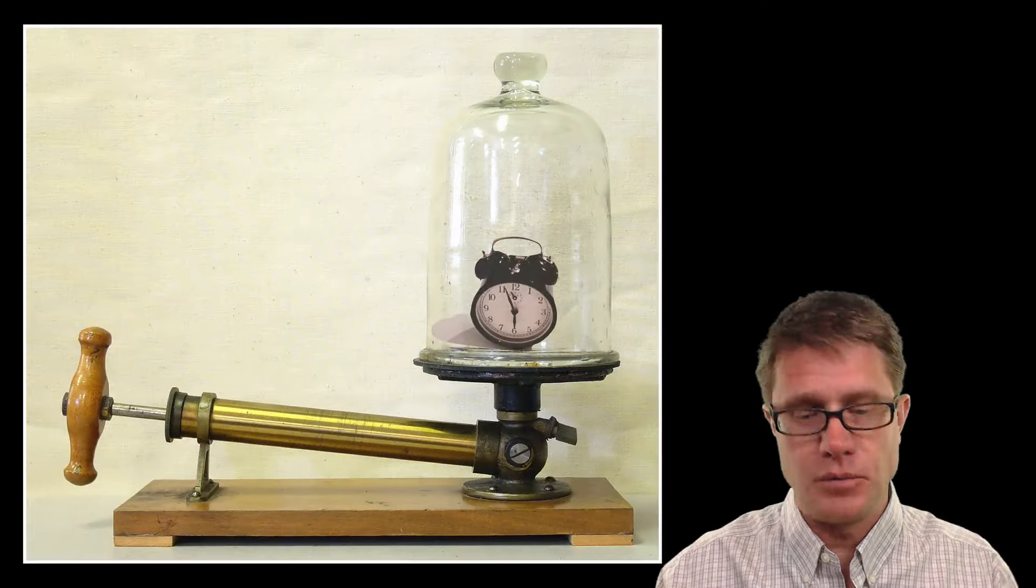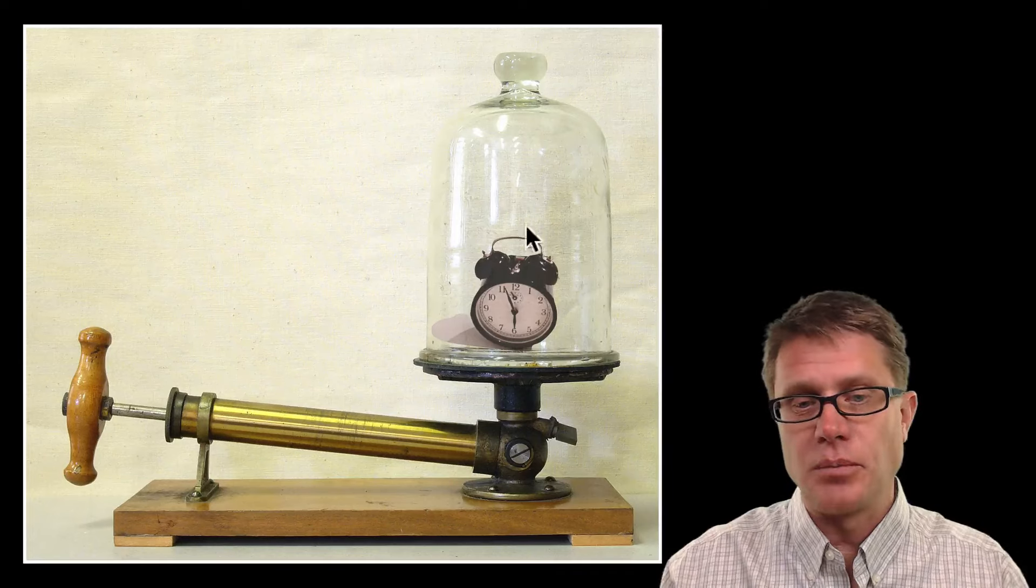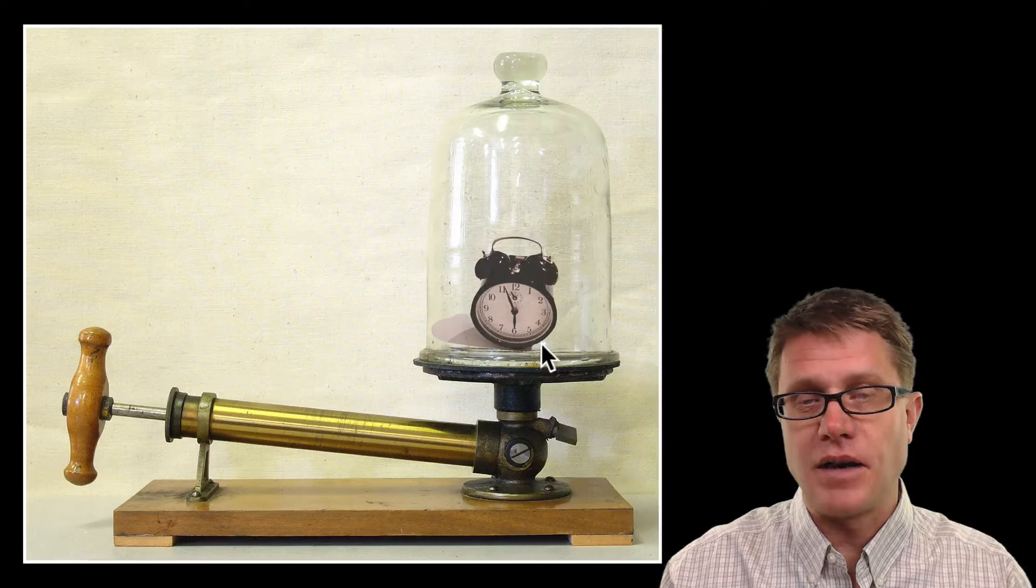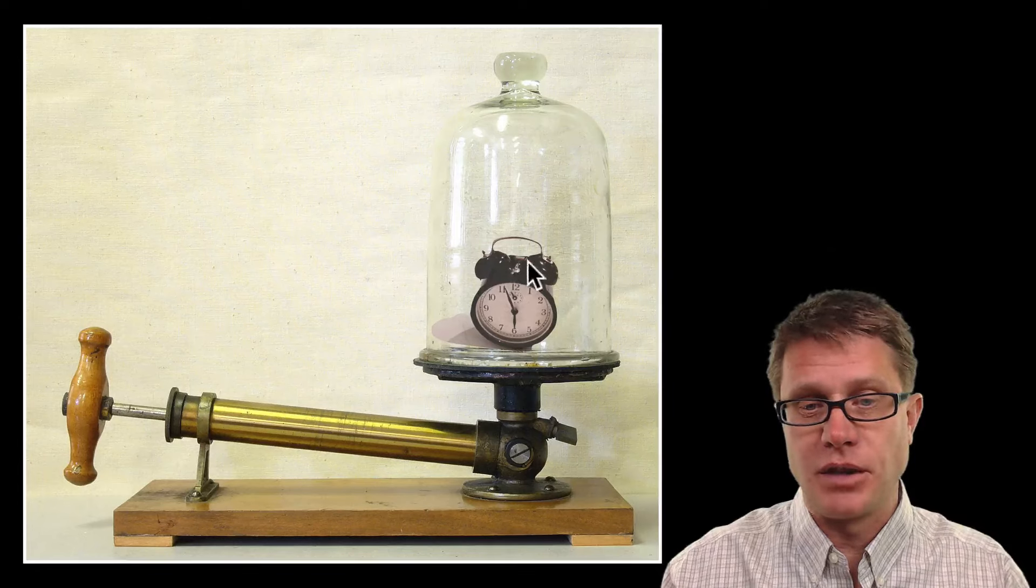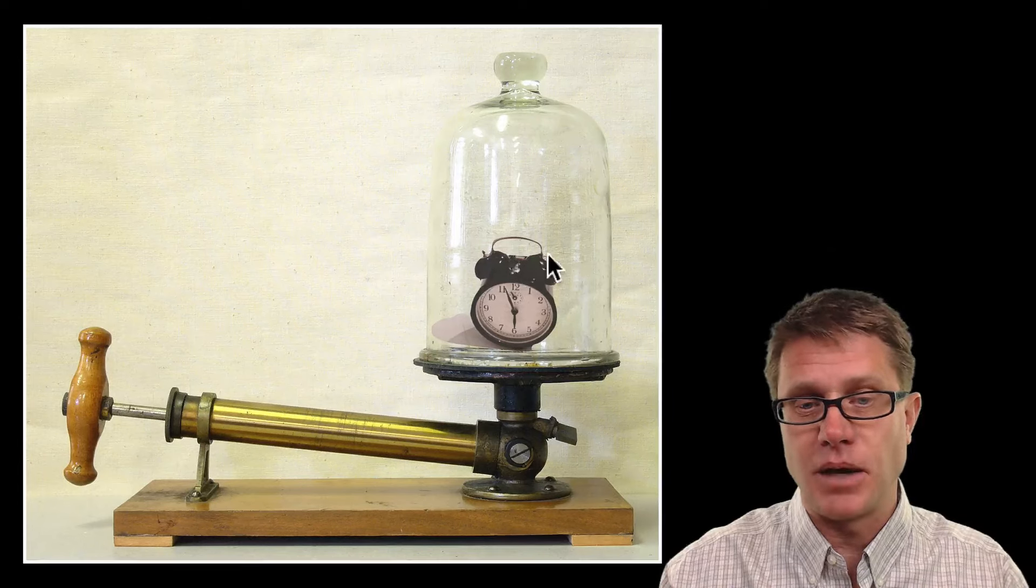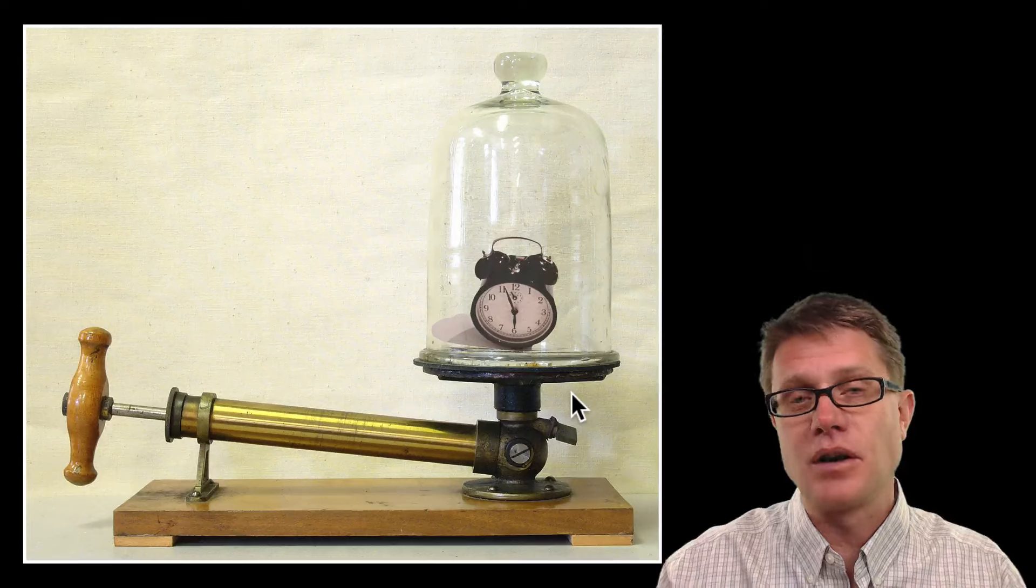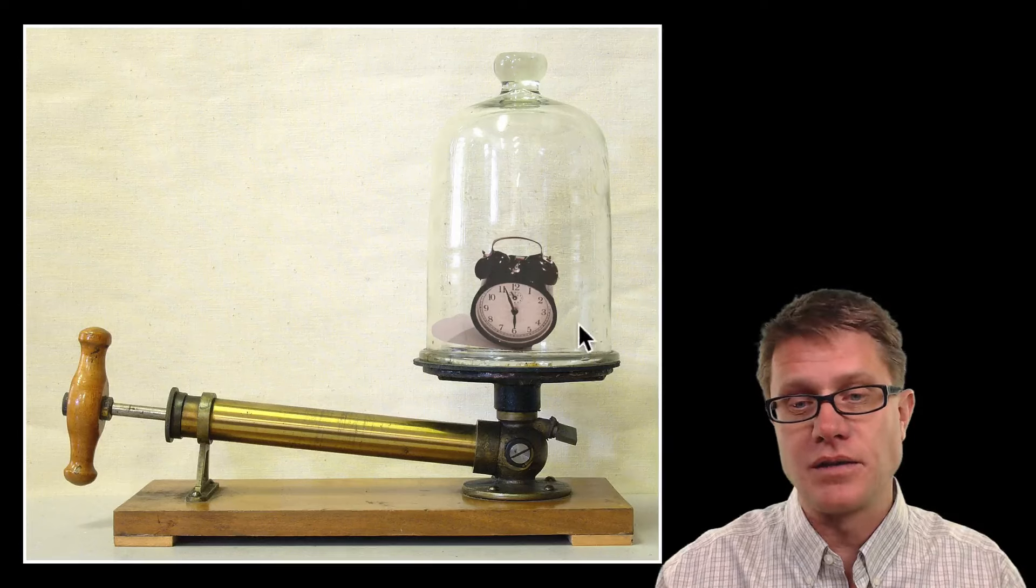A good example of that would be using a vacuum pump. So if we were to put an alarm clock inside a vacuum pump and we would just have the alarm go off. And so the way this works is it vibrates back and forth. And you could ring the bells back and forth like this. But let us say we started to remove the air from inside the vacuum.